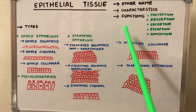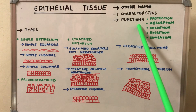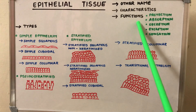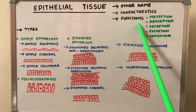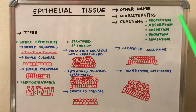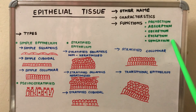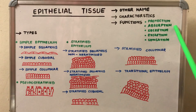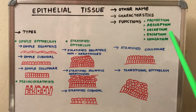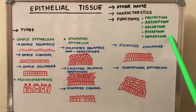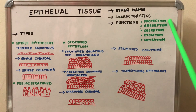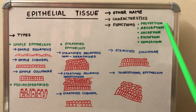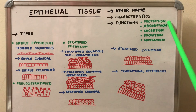Fourth, the epithelial tissue is avascular; therefore the cells derive their nutrition from the underlying capillaries through the process of diffusion. Next, we will discuss the functions of the epithelial tissue. The epithelial tissue behaves in five different ways: protection, absorption, secretion, excretion, and sensation.